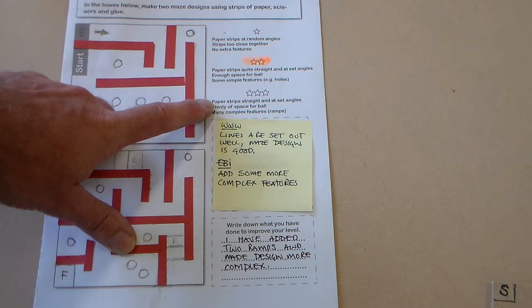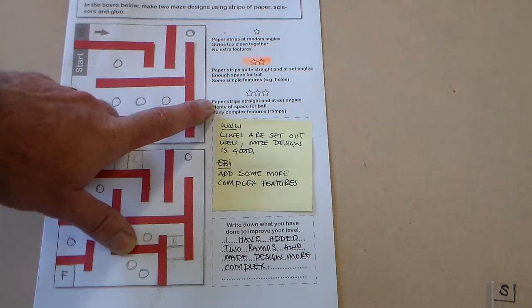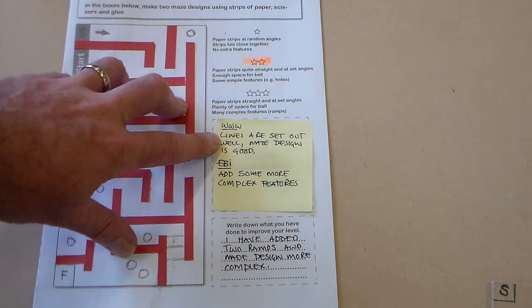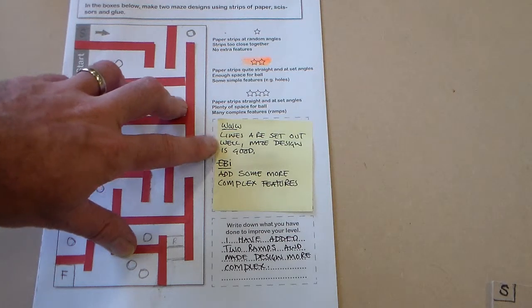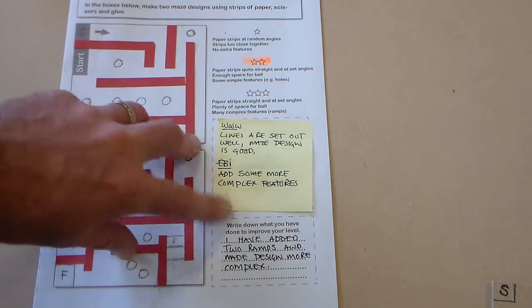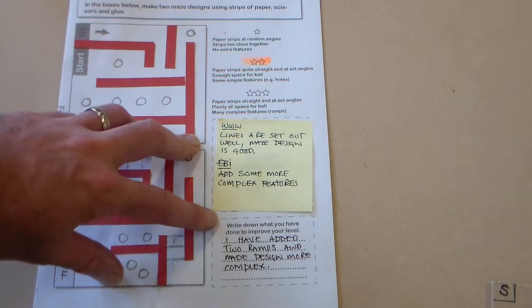So what we really need is to improve our design so it's three stars. The assessment here has been what went well, the design is well laid out. EBI is add some more complex features. So we said here what are we going to do?